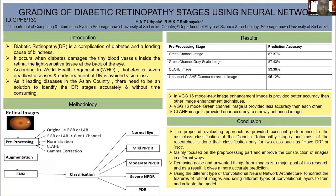Going to the introduction: Diabetic Retinopathy is a complication of diabetes and it is a leading cause of blindness. In persons suffering from diabetes, it damages the tiny blood vessels inside the retina, and the light-sensitive tissue at the back of the eye is damaged.